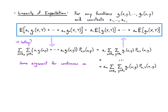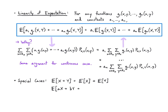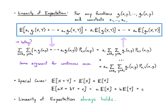In the continuous case, you just replace the sums with integrals. Special cases you'll see often: E[x + y] = E[x] + E[y], and E[ax + by + c] = a·E[x] + b·E[y] + c. Importantly, this linearity of expectation always holds — I don't need independence of the random variables to use it. I can always break up expectation at the plus symbols without checking any conditions.